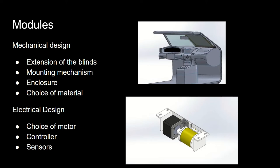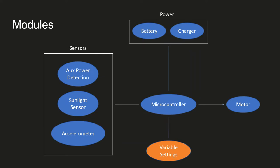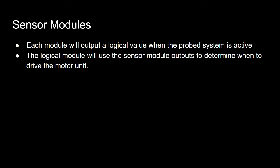For the mechanical design side, the modules are extension of blinds, mounting mechanisms, enclosure, and choice of material. For the electrical design side, the modules are choice of motor, controller, and sensors. Here is a diagram that shows how we are splitting up the modules, with the two main modules being sensors and power. Each sensor module will output a logic value when the probe system is active. The logic module will use the sensor module outputs to determine when to drive the motor unit.